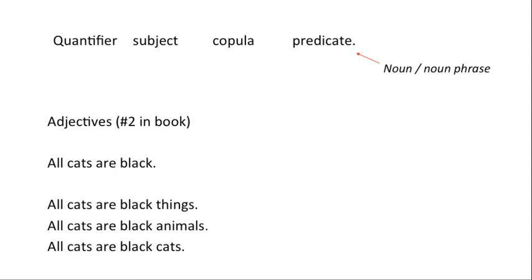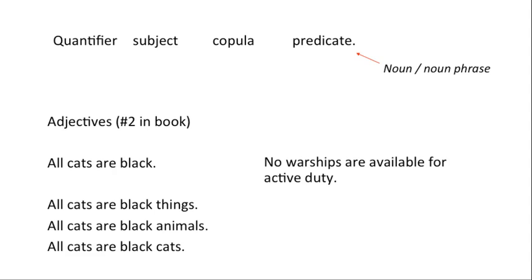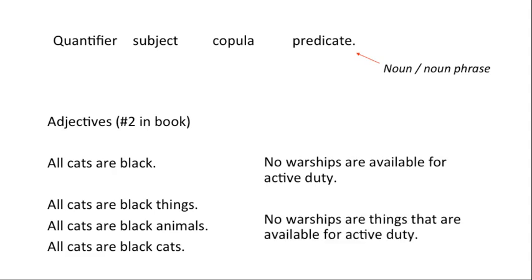This might seem picky, and in this case it maybe is, because everybody would know what you meant. But when we get to more complicated cases, it'll be important to be really specific. I'm going to insist on this on the test and in quizzes: if you see something like this, remember to change adjectives into nouns or noun phrases. Here's a more complicated example: 'no warships are available for active duty.' The problem is that 'available for active duty' is not a class of things, so we need something like 'no warships are things that are available for active duty.' Almost all examples I'm using come from the textbook in 7.3.